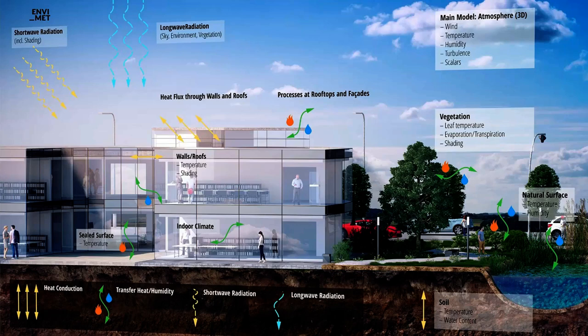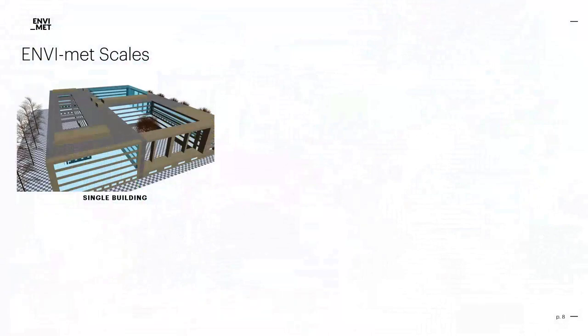Yet EnviMet seems to have found a way to model the most important processes quite accurately, as a lot of scientific evaluation studies have stated over the last decades. Depending on the purpose of the simulation, different scales and details are digitized. There is, for example, a single-building scale with an exact representation of windows, materials, and building shapes such as balconies or specific roof shapes.